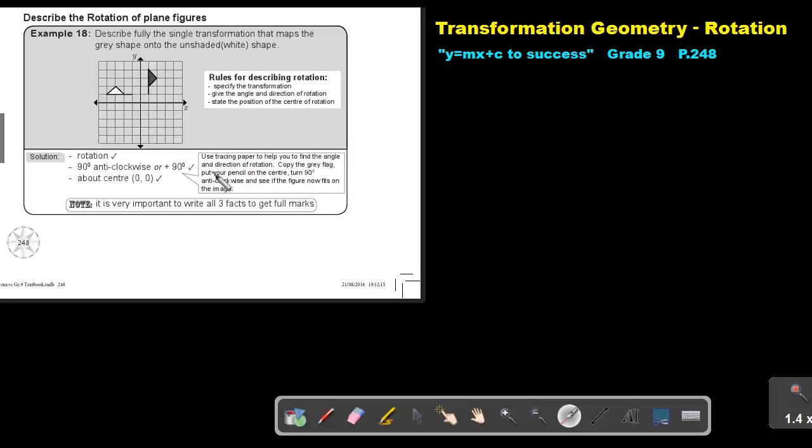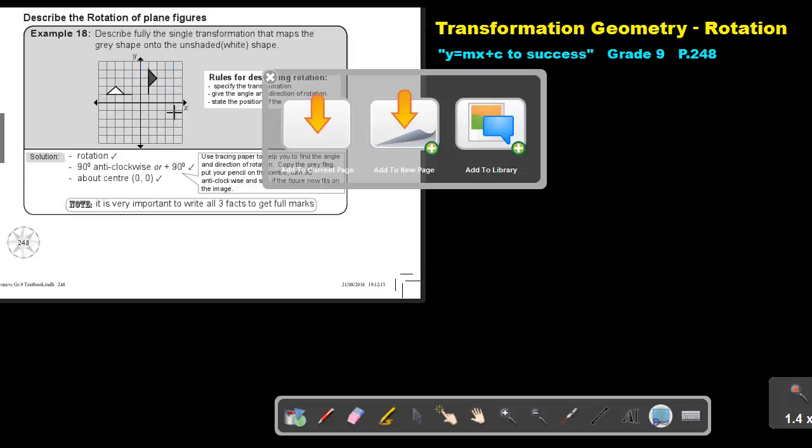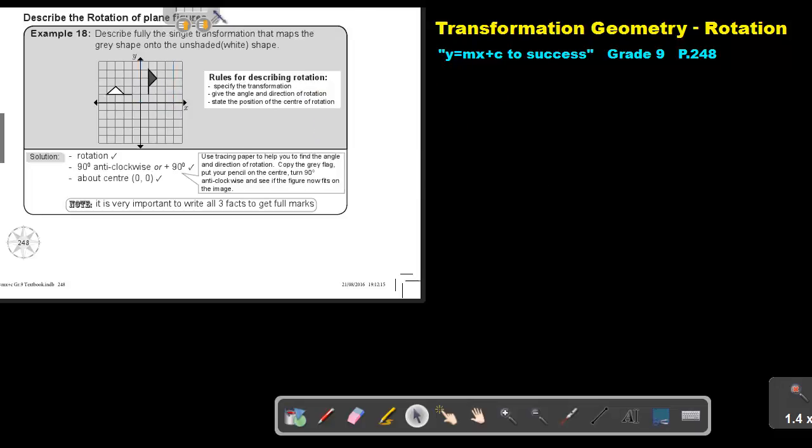Copy the gray flag, put your pencil on the center, turn 90 degrees anticlockwise and see if the figure now is on the image. With my technology it's a bit more difficult, but I'm going to copy. Put your tracing paper there, copy the figure, make an arrow facing north, copy the center. There's the center.